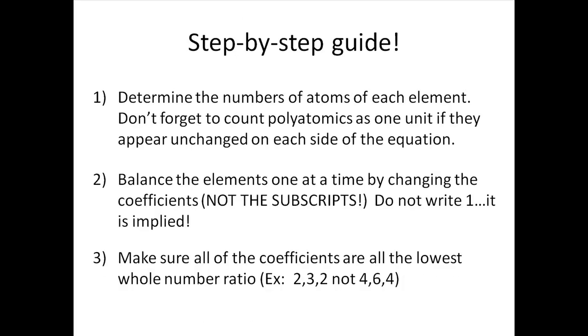Here's the step-by-step guide to balancing equations. First, count the number of atoms of each element on each side. If there are polyatomic ions, and they are on each side of the formula, treat them as one unit instead of breaking them down to their constituent elements. Secondly, balance each element one at a time by changing the coefficients. Do not change subscripts. Remember, if the coefficient is 1, you don't have to write it.